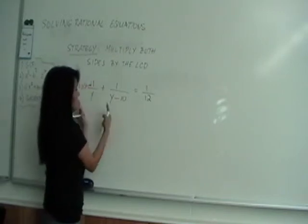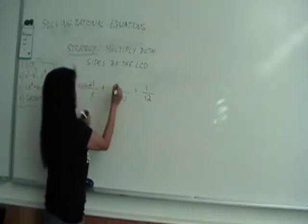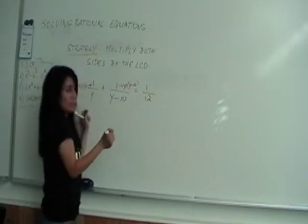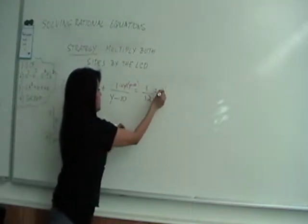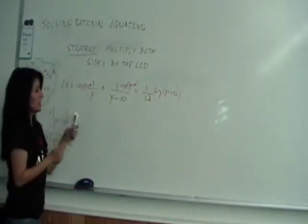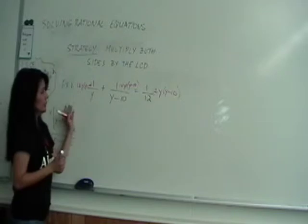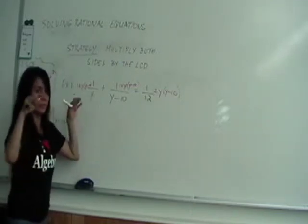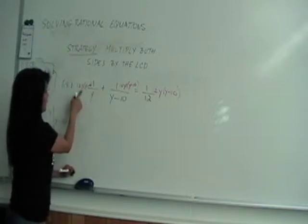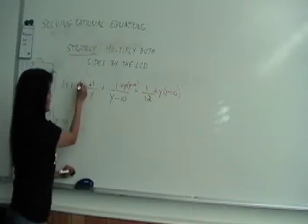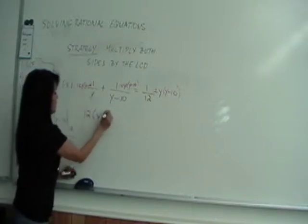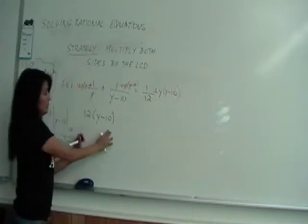On the left I have two terms, so those two terms will each get the 12y and the (y minus 10). The goal is to get rid of the fractions or the denominators. Notice that the y in the first term cancels with the y in 1/y. So you get 12 times the quantity (y minus 10), denominator free.